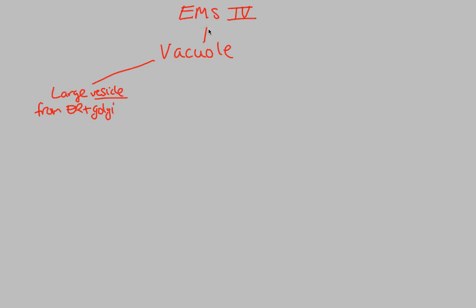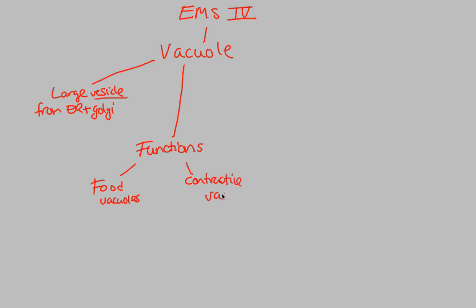Vesicles are a great way to utilize our endomembrane system. Continuing with the thought of vacuoles, their main function is two-fold in animal cells. Two functions in animal cells include food vacuoles and contractile vacuoles. Food vacuoles help promote a process called phagocytosis.